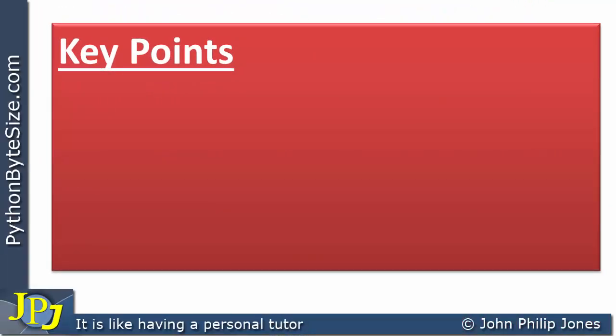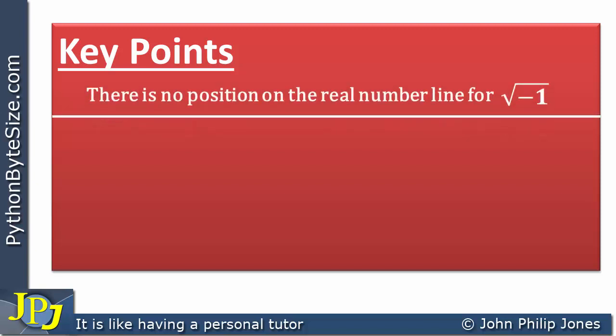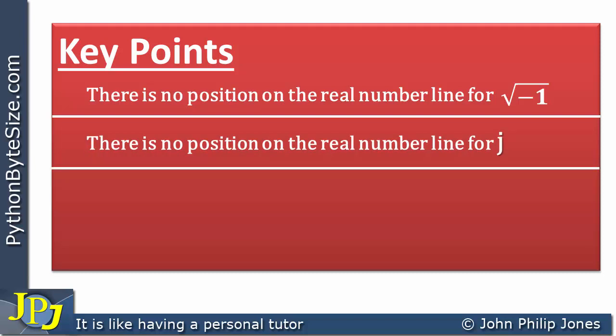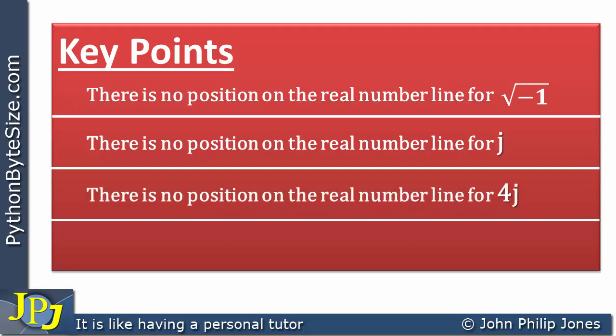What are the key points from the work shown in this video? There is no position on the real number line for the square root of minus 1. There is no position on the real number line for j — or as it would be known in Python, 1j, one lot of j — because j is the symbol that represents the square root of minus 1. There is no position on the real number line for 4j, meaning four lots of the imaginary unit, four lots of the square root of minus 1. These imaginary numbers do not belong to the real number set; they belong to the complex number set.